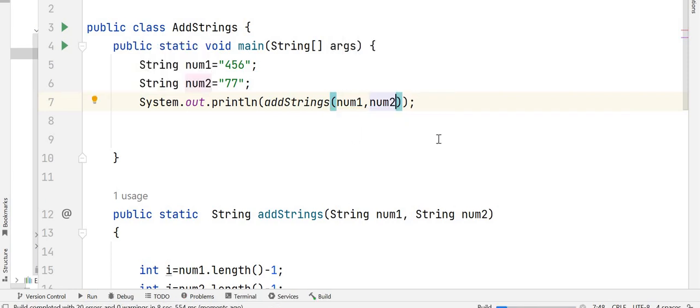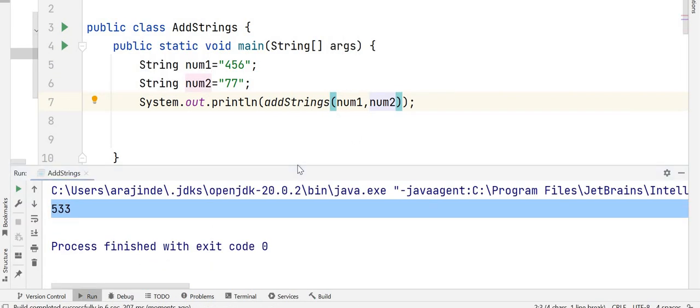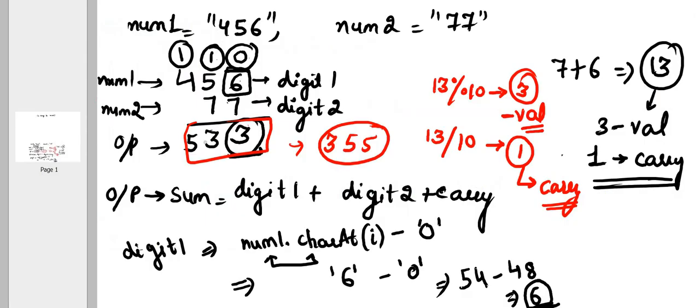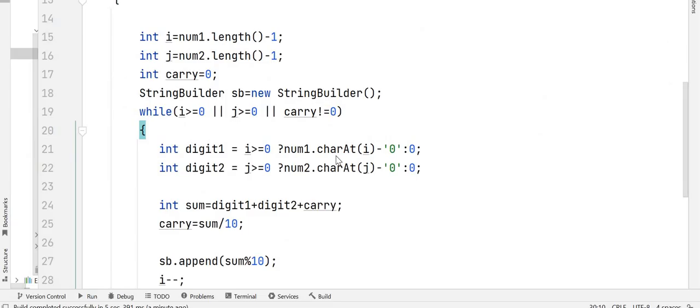Let's call the method addStrings num1 and num2. So let's run the program and see the output. So we can see here the output is 533 which is a correct output. So this is how we need to solve this problem.